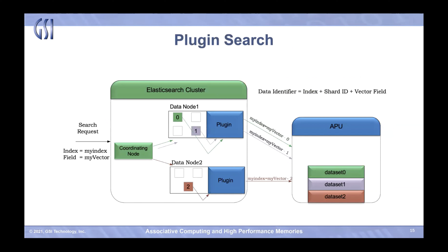Here you can see another view. We actually use the standard way of Elasticsearch to perform the search. For example, let's say you have an index with a vector field called my_vector and you perform the search. You go to the coordinate node, and since the index consists of — let's say — three shards, Elasticsearch splits the calls in parallel to the relevant shards. Our plugin callback is called, and we call the search on each data set. We store a data set per shard — shard vectors are stored in each data set, loaded into our hardware — and we perform the search in parallel. It's done very fast.